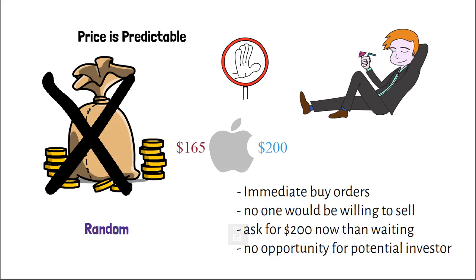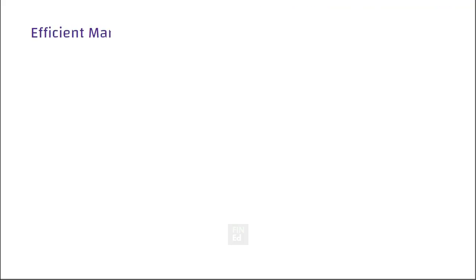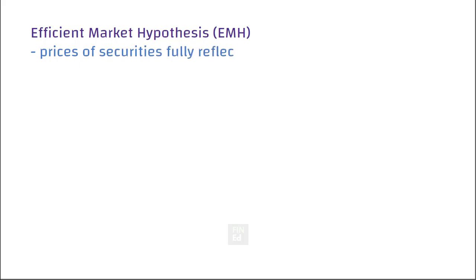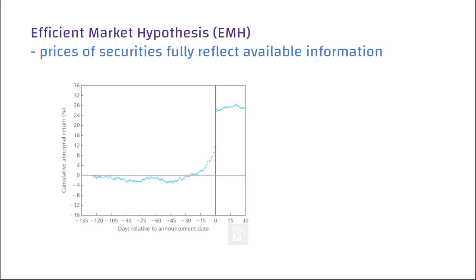If stock price movements were predictable, this would be damning evidence of stock market inefficiency, because the ability to predict prices would indicate that all available information was not already reflected in stock price. Therefore, the efficient market hypothesis (EMH) is the hypothesis that prices of securities fully reflect available information about securities. This graph illustrates the response of stock prices to new information in an efficient market — specifically, announcement of a takeover attempt should cause the stock price to jump immediately, leaving no time for potential investors to exploit the news and make abnormal profit.